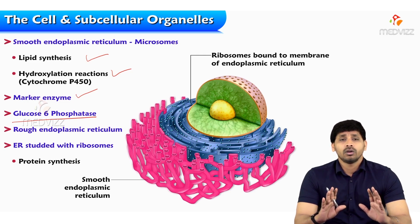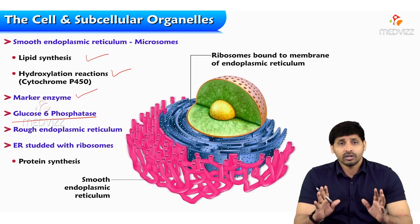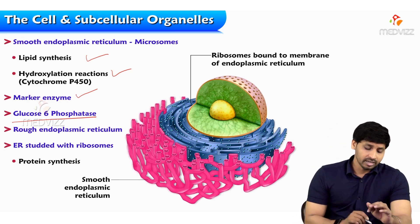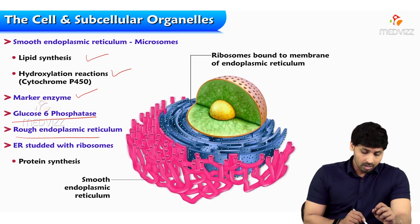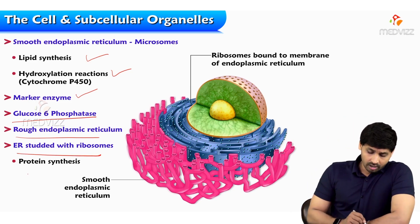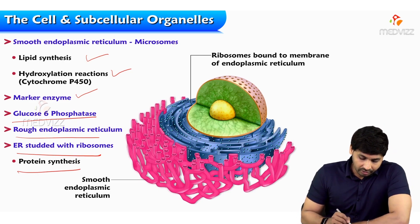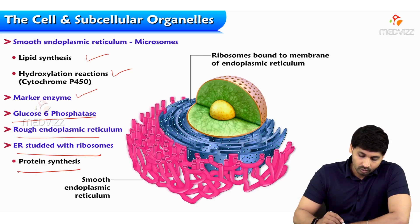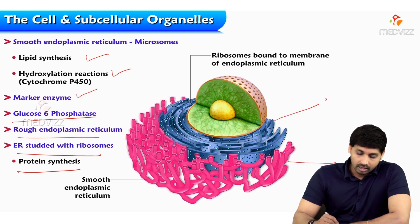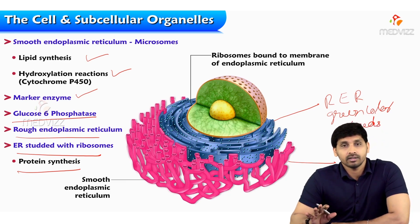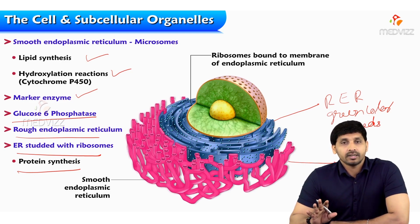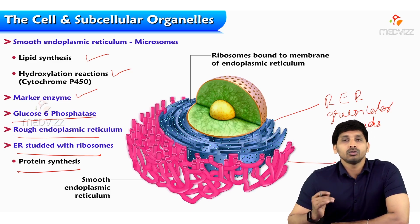The marker enzyme for the endoplasmic reticulum is glucose-6-phosphatase. In glycogenolysis, this enzyme is required to produce free glucose, and it is present in the smooth endoplasmic reticulum. Rough endoplasmic reticulum is studded with ribosomes and is also involved in protein synthesis. Looking at the diagram, smooth ER has no ribosomes, while rough ER shows green-colored beads representing ribosomes. The plain pink regions have no such beads — indicating smooth endoplasmic reticulum.